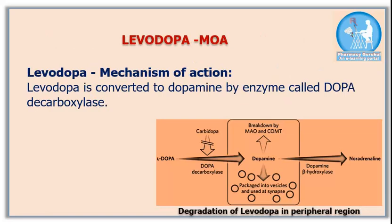Patients need dopamine to get relief from Parkinson's disease, and all the drugs discussed in the classification section work to enhance dopamine in the brain. Levodopa, also known as L-dopa, once it enters the brain is converted into dopamine by the enzyme aromatic L-amino acid decarboxylase, also known as DOPA decarboxylase.